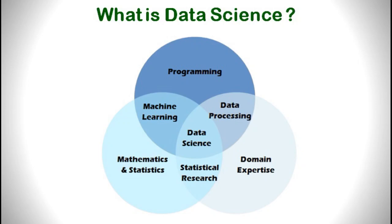Data science is nothing but a science of making sense of data. It involves the usage of automated methods to analyze data and extract information or insights to find the unknown. It creates data products which help in decision making. Data science involves various techniques or functionalities like: Analytics, Predictive Models, Statistical Analysis and Modeling, Data Mining, Sentiment Analysis, and What If Analysis.